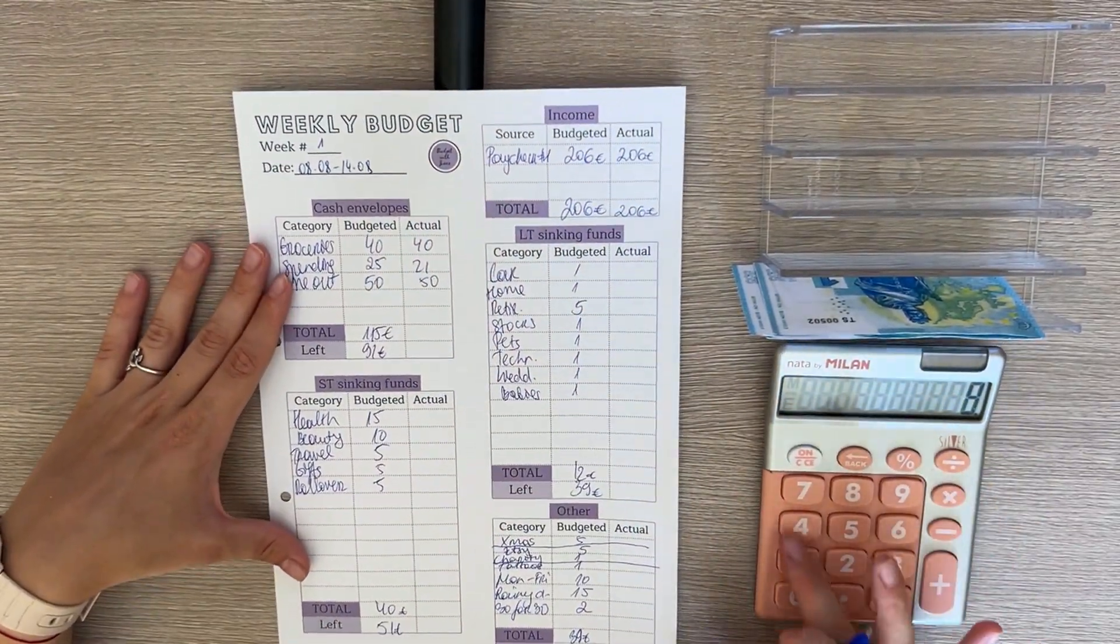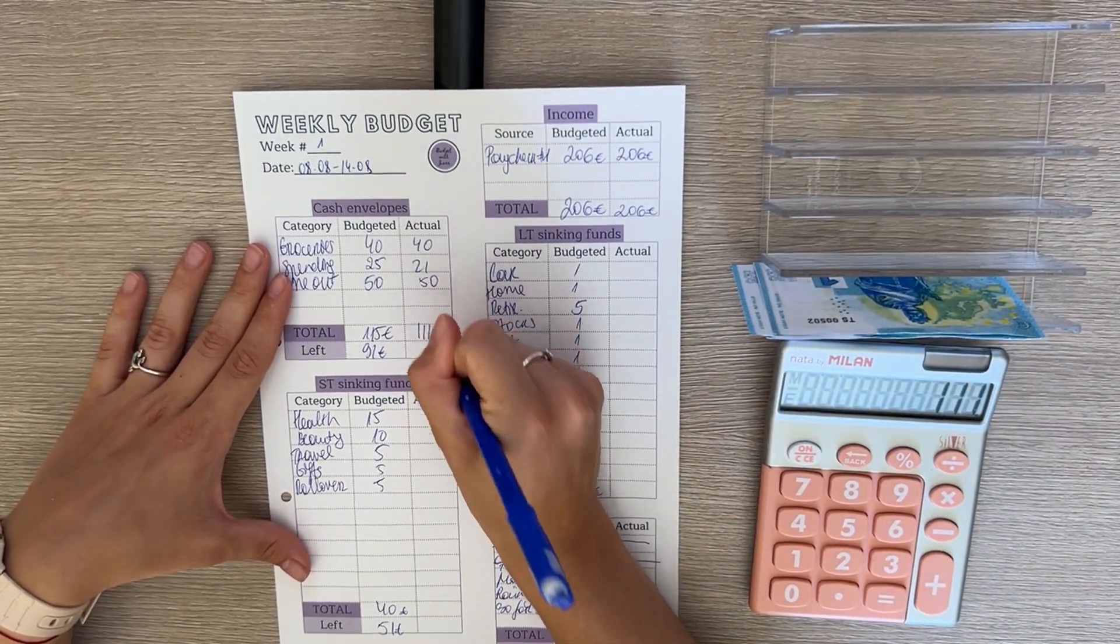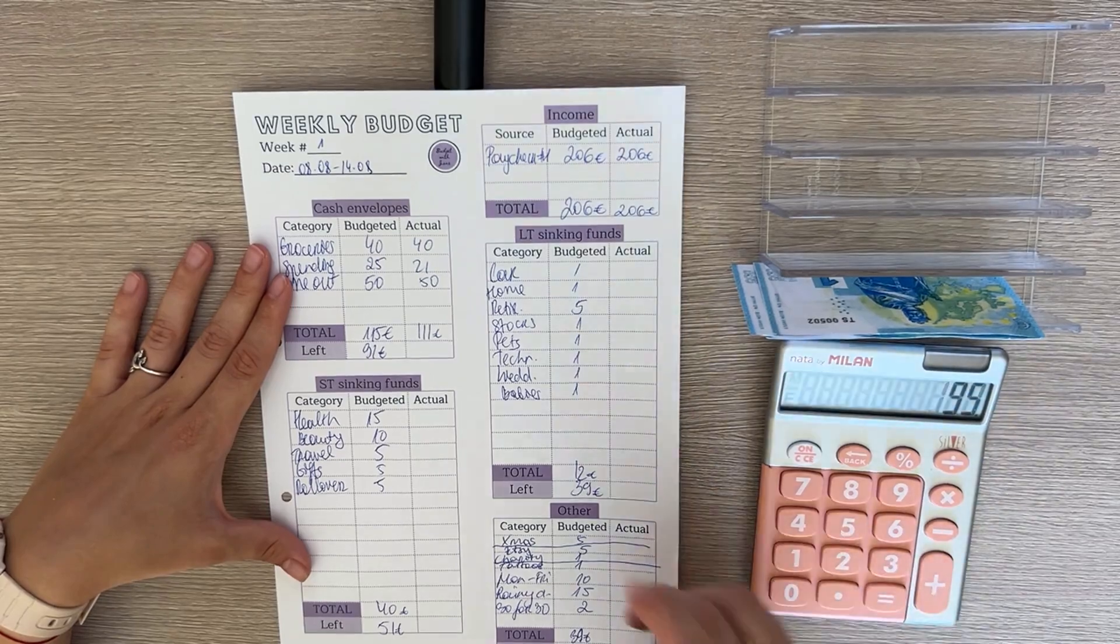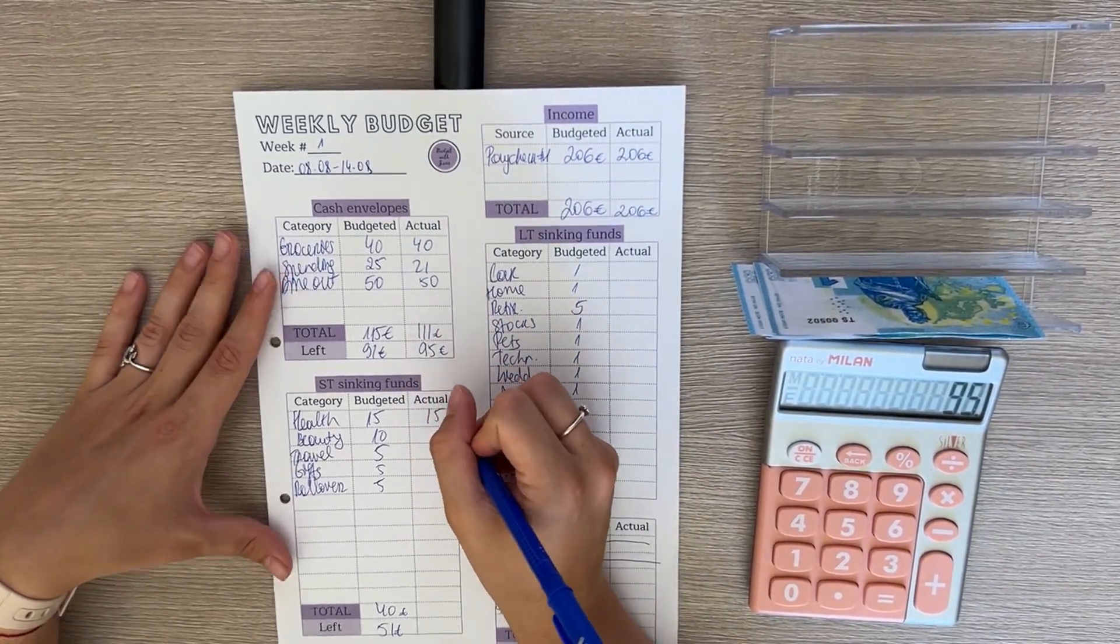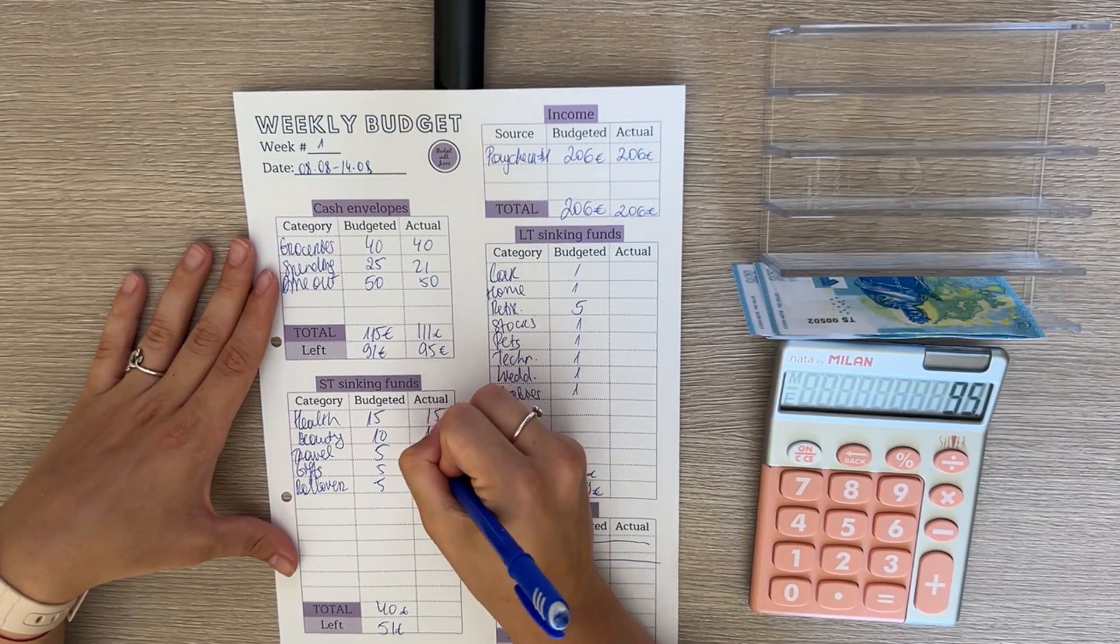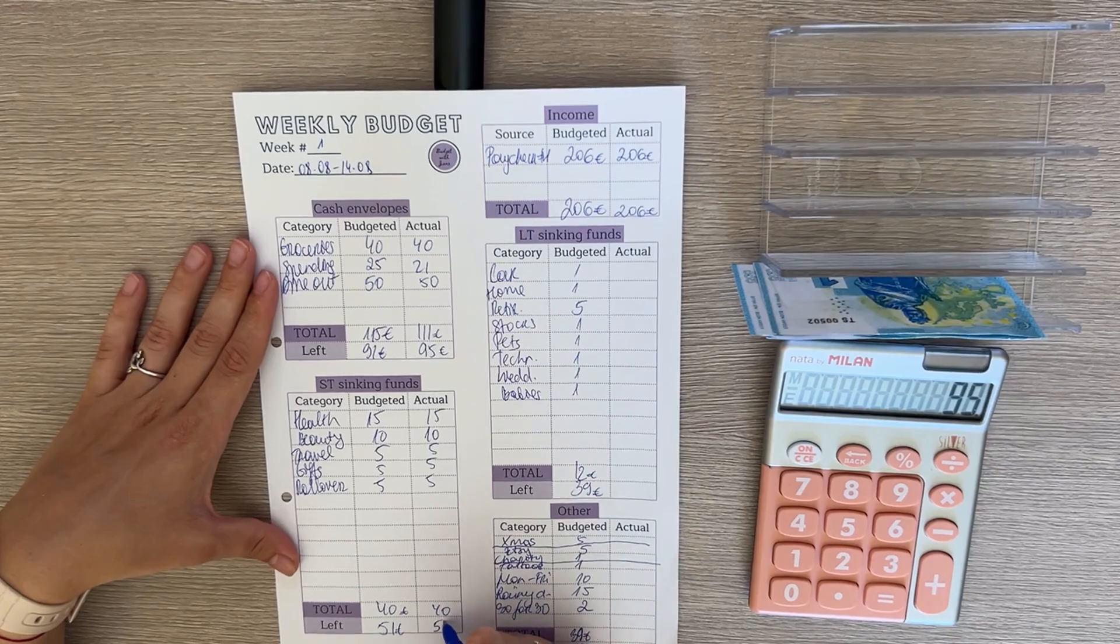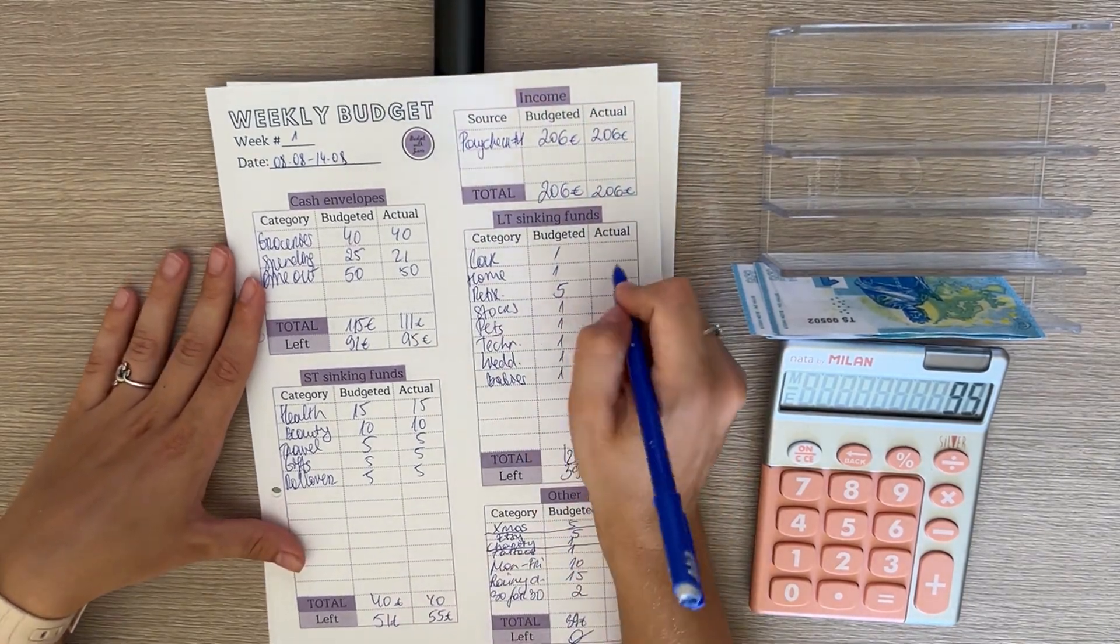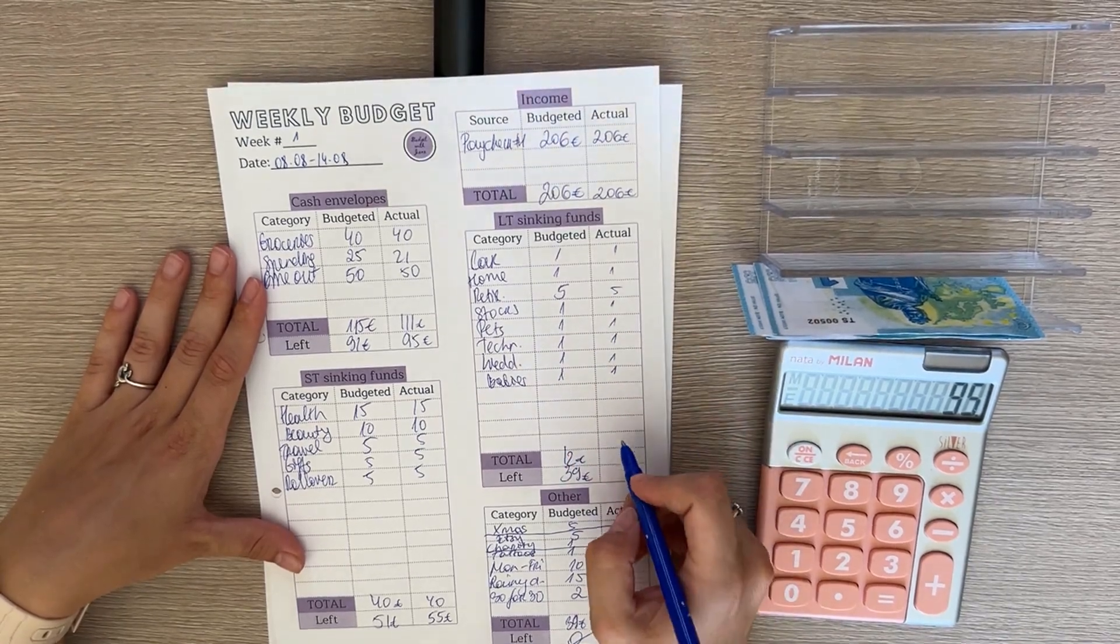So in total that was 111 euros in cash envelopes and we have left to budget 95 euros. Great. So health did actually get 15, beauty 10, travel, gifts, and rollover each 5, so that's 40. We have 55 left, and then here also nothing changed in our long-term sinking funds. Each got 1 except retirement that got 12.